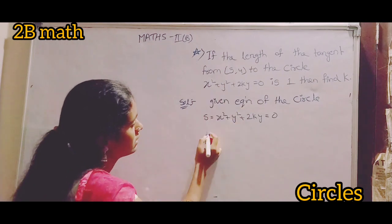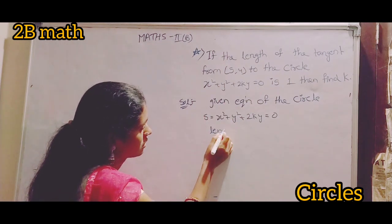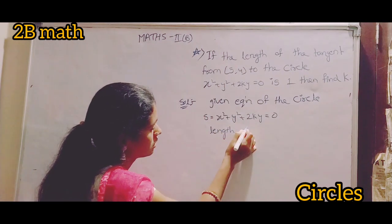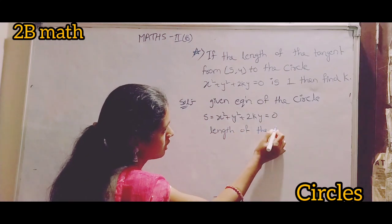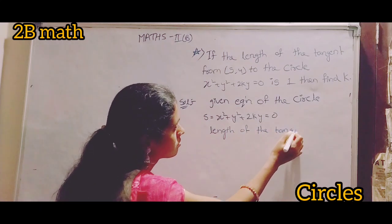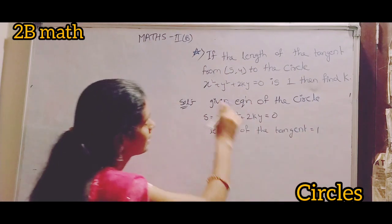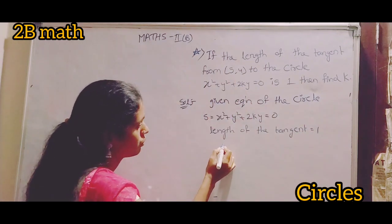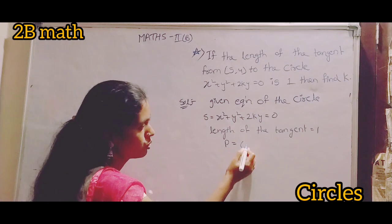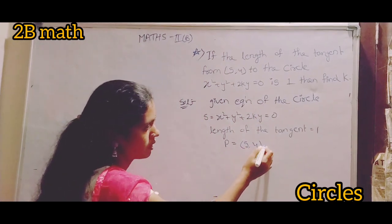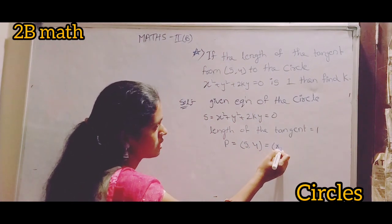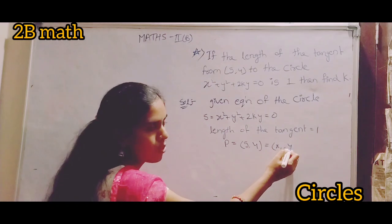Length of the tangent is 1. Given point (5,4), P = (5,4), this equals (x₁, y₁).